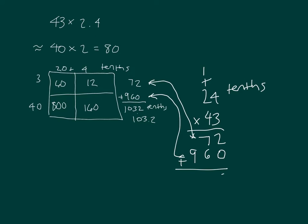Add them together. 2, 3, 1, 10. 1,032 tenths, which in standard form is 103.2.